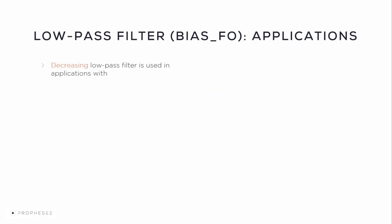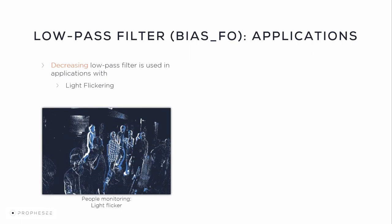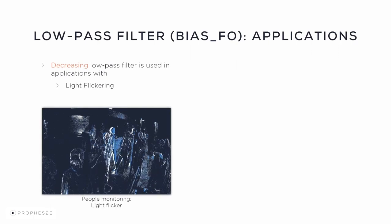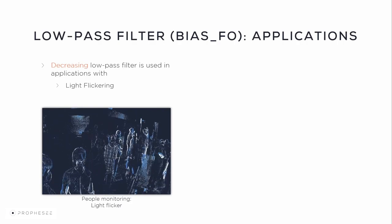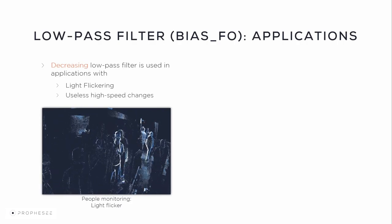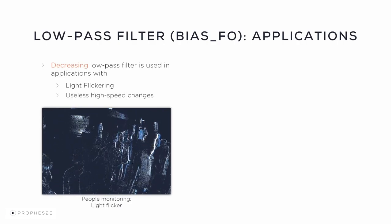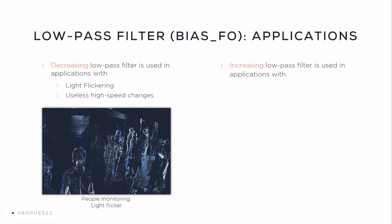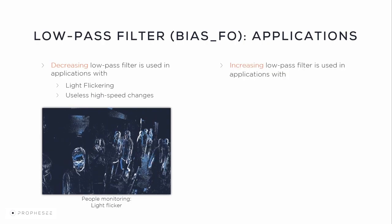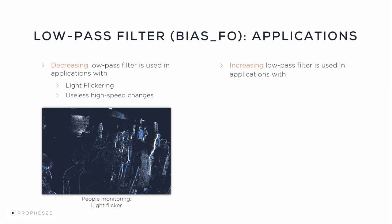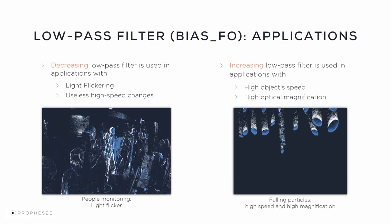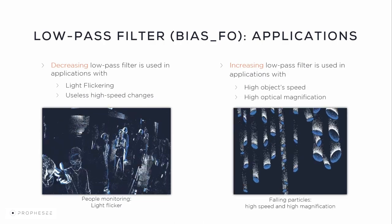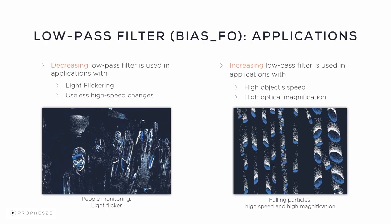Decreasing the low-pass filter to remove high frequency noise is used in applications with flickering light or useless high-speed changes. Increasing the low-pass filter to improve pixel latency is used mainly in applications with high object speed or high optical magnification, like in the example with particles.